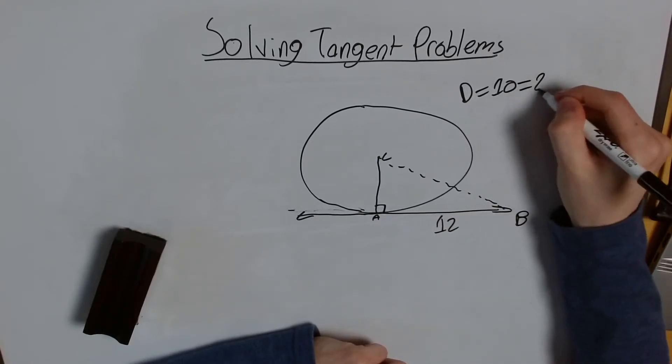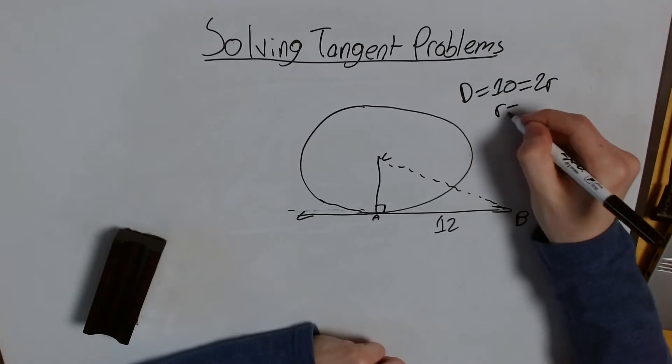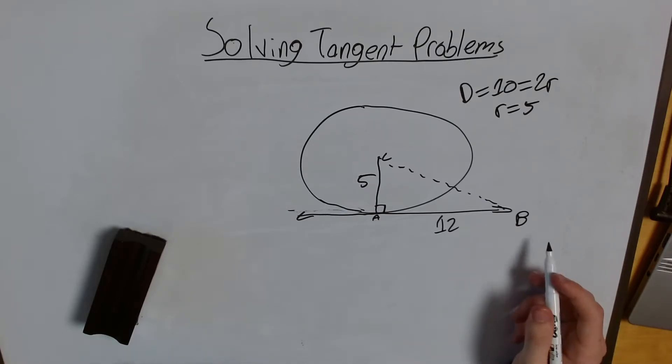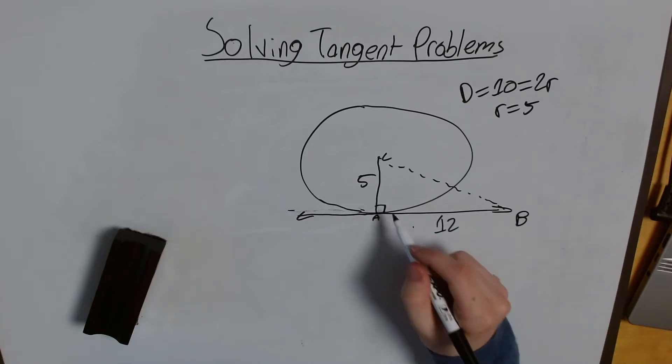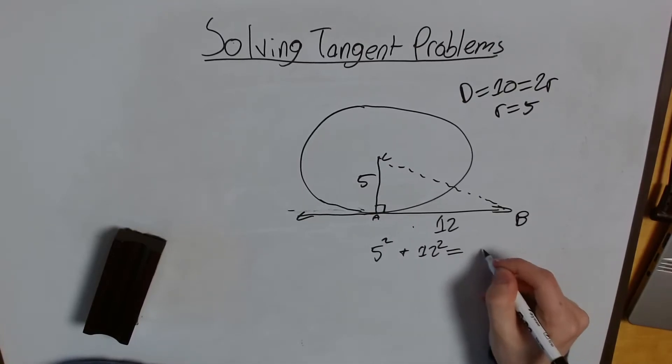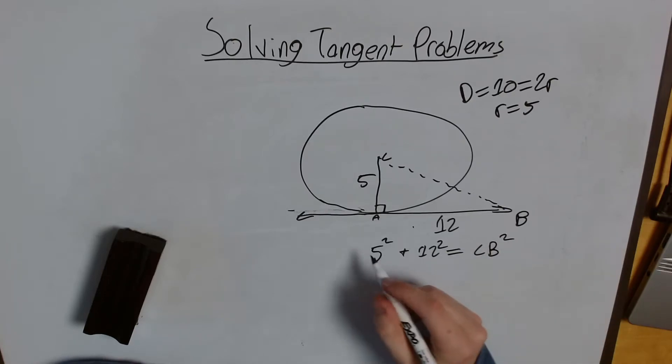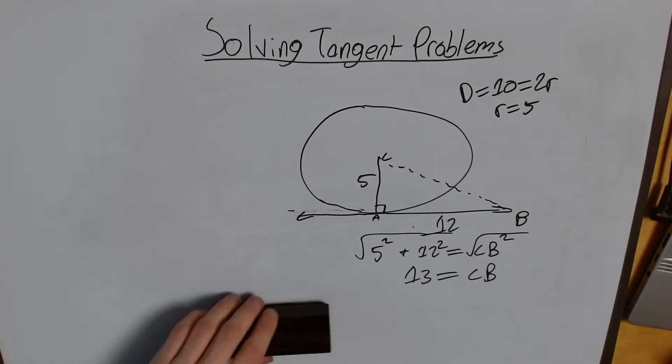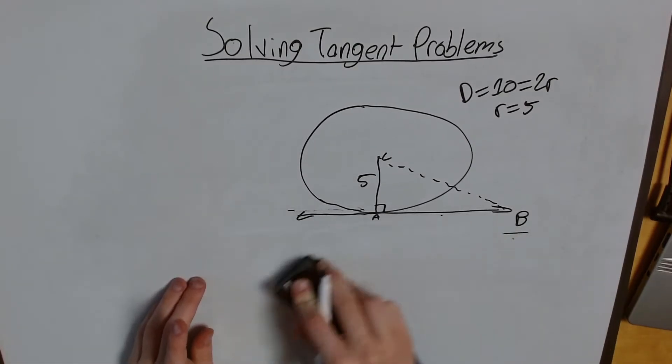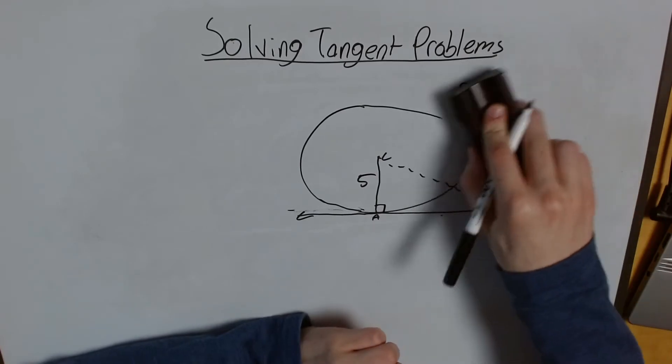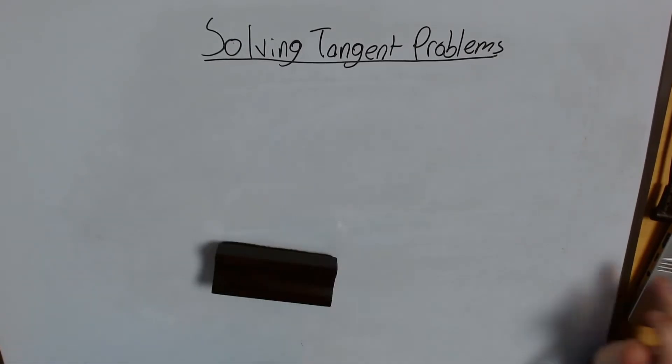Well, we know diameter is 2 times the radius. That means the radius is 5. So I know this is 5 here, and now I have a pretty simple Pythagorean theorem problem. I know my two bases, and I want to know my hypotenuse, so I'm just going to square them. And then I'm going to just take the square root of that. My final answer is 13 equals CB. So in those examples, we can use just the simple fact that tangents are perpendicular to the radius of a circle to solve the problem, and use our nice Pythagorean formula, which should just make things a lot simpler.